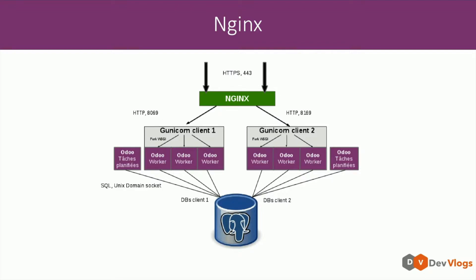The next thing is nginx, which is a proxy server that handles requests. Basically all the requests will be sent to nginx and it will do the load balancing for your server. You can run two instances of the same add-on so that it runs on two different ports and the load balancing is handled within nginx.